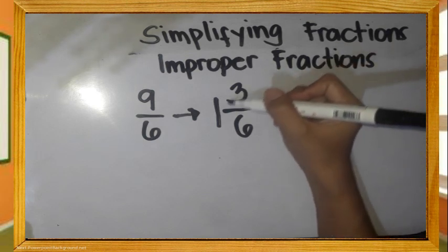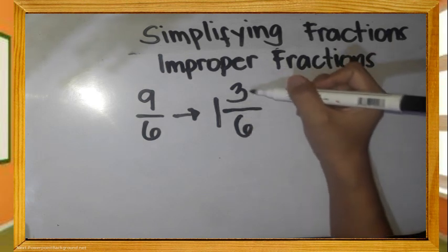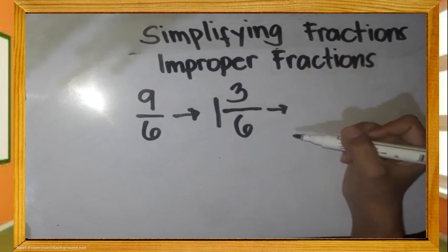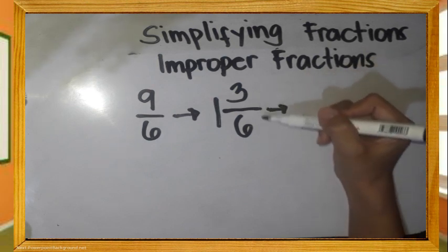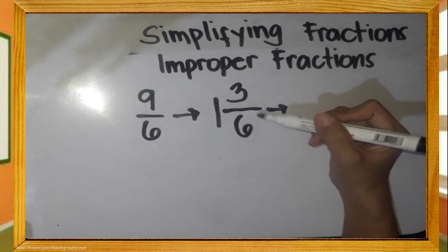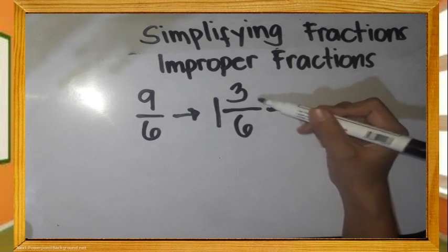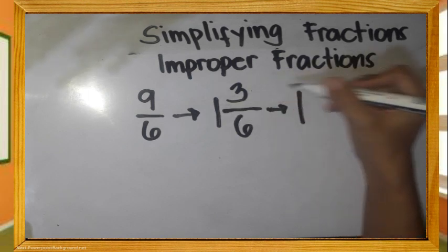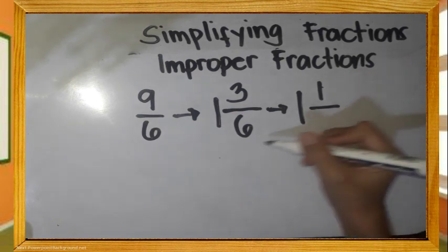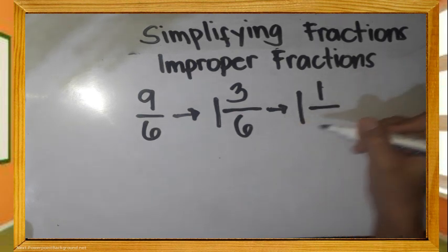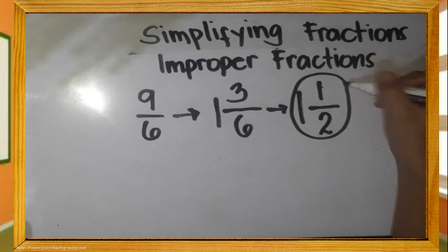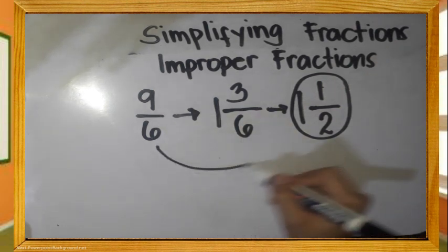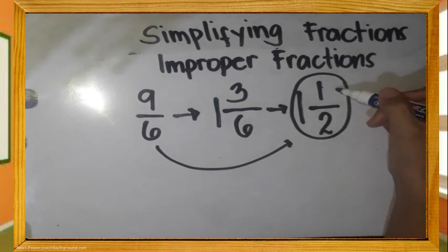Pansinin ulit ang ating fraction — ito ay pwede pang masimplify. Mag-isip ng numero na pwedeng mag-divide sa 3 at sa 6. I-divide natin ito sa 3. Kopyahin si 1 whole. 3 divided by 3 is 1. 6 divided by 3 is 2. Kaya naman, ang simplest form ng 9/6 ay 1 and 1 half.